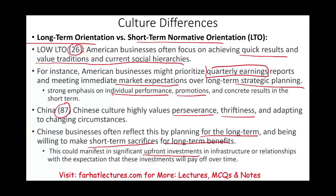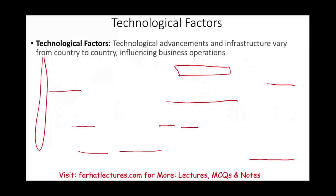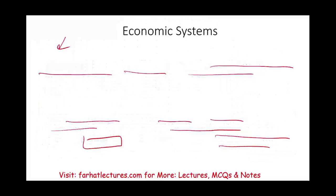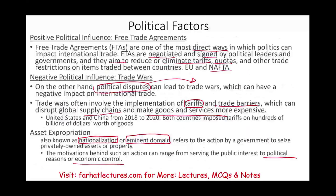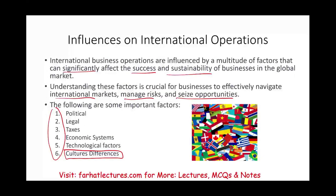In order to operate internationally, a business needs to understand what type of environment they are operating in and what influences that environment. Again, those factors are: political, legal, taxes, economic system, technological factors, and cultural differences — which is a big one. Go to Farhat Lectures and look at additional multiple choice questions to help you understand this topic better and prepare for the exam. Good luck, study hard, and stay safe.